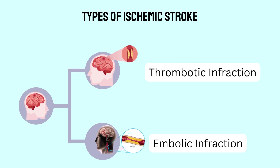Embolic strokes occur when a clot that has formed elsewhere — usually in the heart or neck arteries — travels in the bloodstream and clogs a blood vessel in or leading to the brain, reducing blood flow to the brain and causing severe stress and untimely cell death or necrosis.